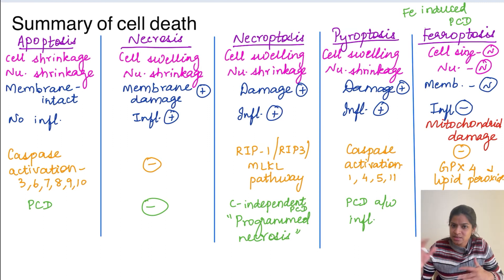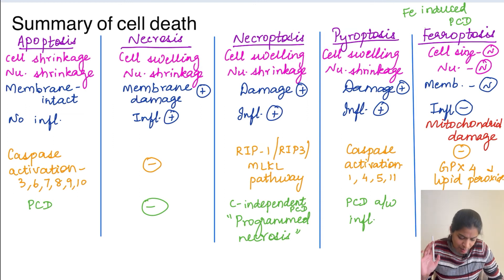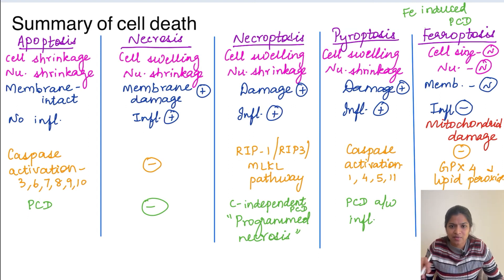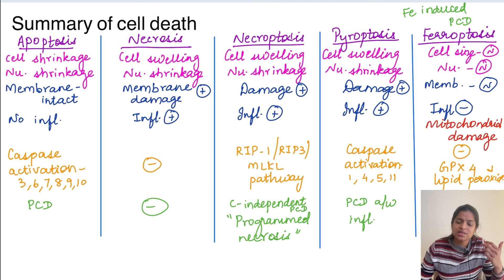In ferroptosis — a very distinct form: cell size is normal, membrane is intact, nucleus is normal. Only the mitochondria shows damage with four ultrastructural findings: loss of cristae, outer mitochondrial membrane rupture, increased mitochondrial membrane density, and mitochondrial shrinkage. Mechanistically: apoptosis uses caspase activation; necroptosis uses RIP3 kinase/ripoptosome; pyroptosis uses caspases 1/4/5/11; ferroptosis involves free radical injury and lipid peroxide formation, inhibited by GPX4. Lipid peroxide is the marker; GPX4 is the master regulator.